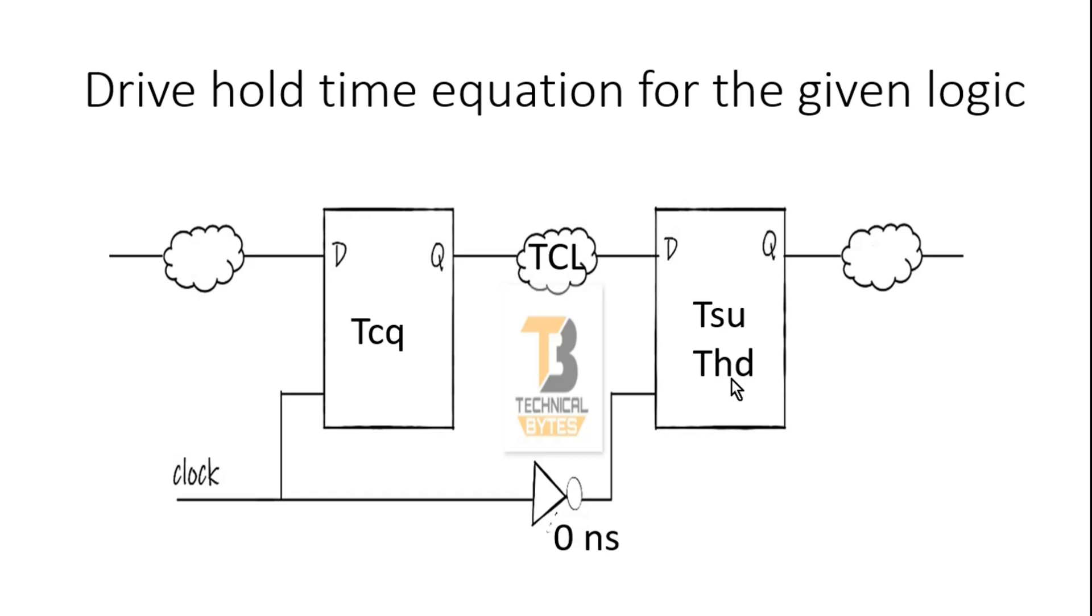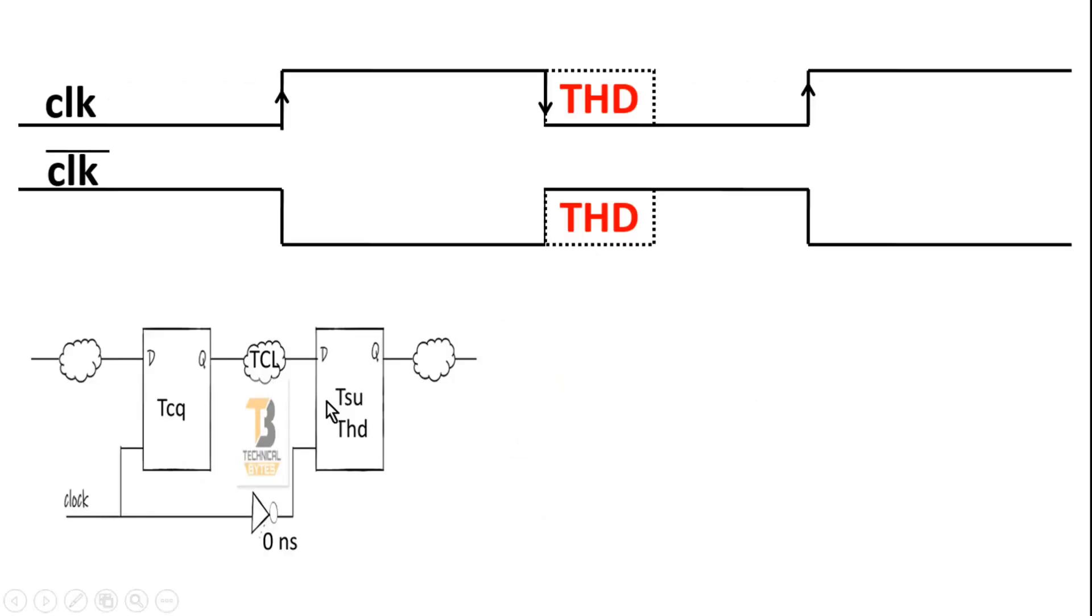Friends, the answer to this question is very interesting and important to understand. Those who know the answer, please write it down in the comment section and we can discuss there. Otherwise, let me reveal the answer. This is a zoomed out version of our logic. This is the clock signal applied to the first flip-flop which throws data, and this is the inverted version of clock applied to the second flip-flop which receives the data.